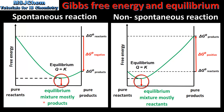For a non-spontaneous reaction, the minimum value of Gibbs free energy occurs further towards pure reactants than pure products. Therefore, the equilibrium mixture will consist of mostly reactants. Note that in both types of reaction, the equilibrium position corresponds to the minimum value of Gibbs free energy and the maximum value of entropy.